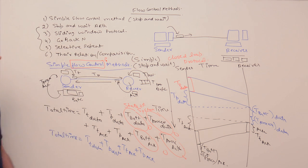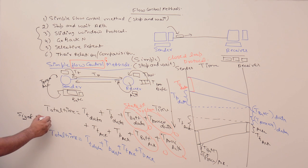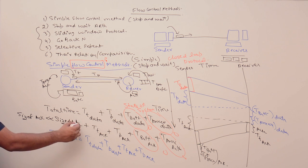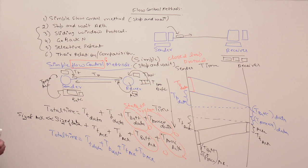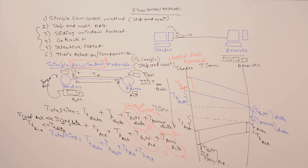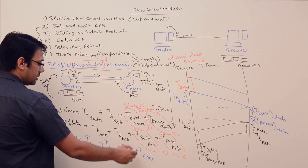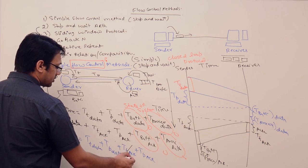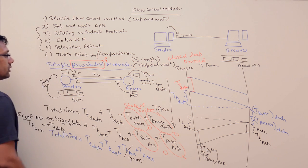The size of an acknowledgement is very very small compared to the size of a data packet. For example, in LAN the data packet size is 1500 bytes but the acknowledgement is only a few bytes. So the transmission time of acknowledgement is very very small compared to the transmission time of data. If a question provides the transmission time of acknowledgement, you can use it; otherwise you can ignore it or take it as zero.